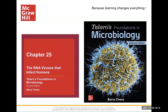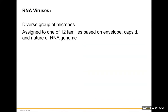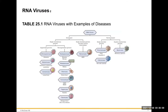Chapter 25: RNA viruses that affect humans. Last time we covered DNA viruses; this time we're doing RNA viruses, which include HIV, coronavirus, and many things we deal with today. RNA viruses are a diverse group of microbes assigned to one of 12 families based on their envelope, capsid, and the nature of the RNA genome. RNA is usually single-stranded. They can be enveloped or non-enveloped, and the enveloped ones have segmented versus non-segmented genomes.